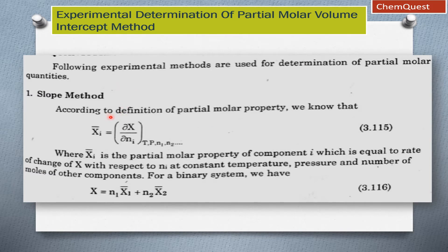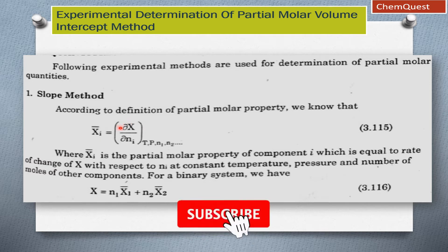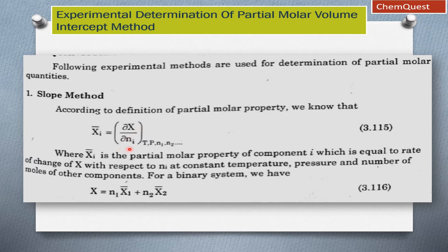According to the definition of partial molar property, Xi bar is equal to the small change in the value of X divided by the small change in the number of moles of component i, at constant temperature, pressure, and constant number of moles of components 1 and 2.